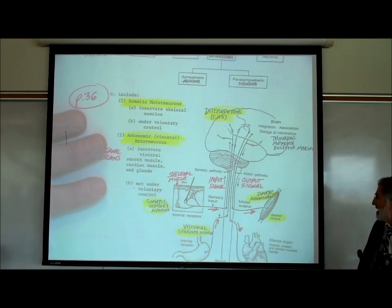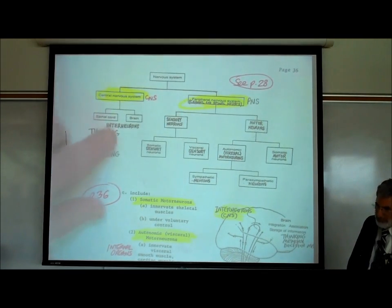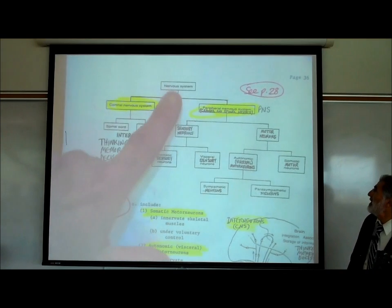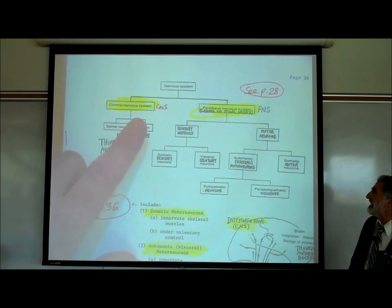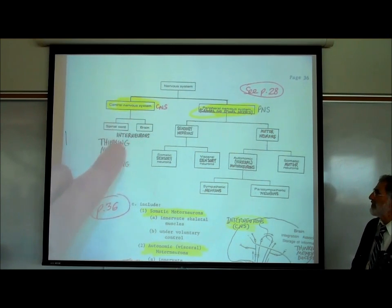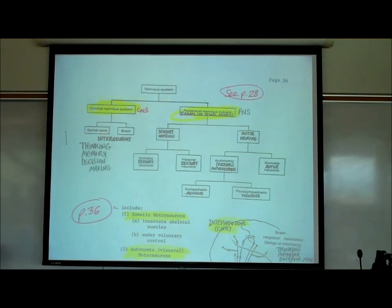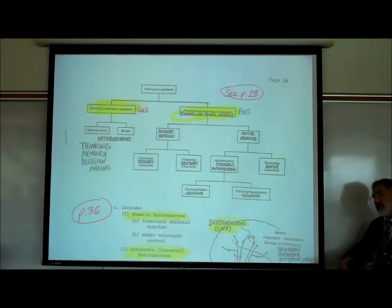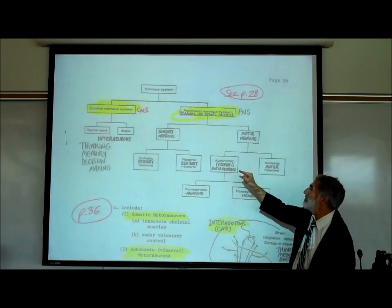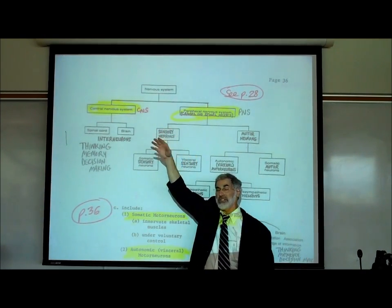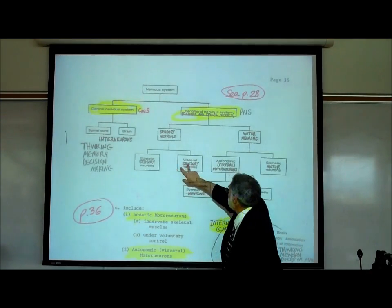Somatic motor neurons permit voluntary control of skeletal muscles, whereas autonomic motor neurons provide automatic involuntary control of internal organs. We summarized this using a chart: the nervous system divides into the central nervous system — brain and spinal cord, containing interneurons used for thinking, memory, and decision-making — and the peripheral nervous system, all the nerves branching off the brain and spinal cord going to the periphery, containing sensory (afferent) neurons bringing information in and motor (efferent) neurons sending commands out to the effectors. There are two types of sensory neurons and two types of motor neurons.